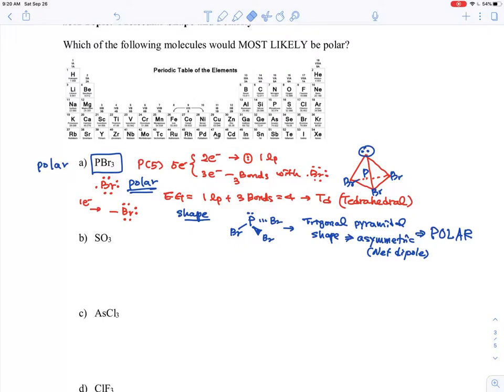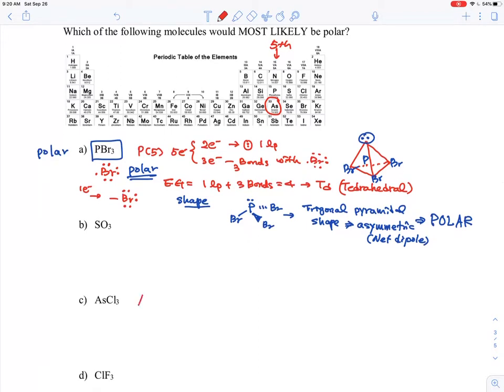The third problem is ASCl3. Arsenic is on the periodic table right here, in the same column as the fifth group.